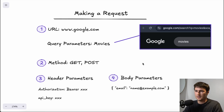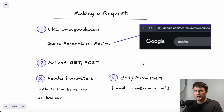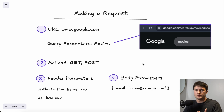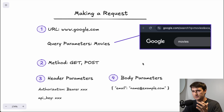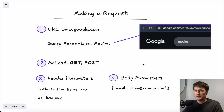The method describes the action to be performed at a given URL. The most common HTTP methods include GET — meaning receive information — and POST — meaning send information. There are also a few others like DELETE, PUT, and PATCH, which are less common.